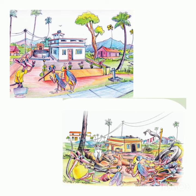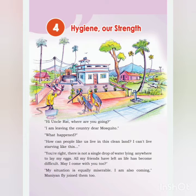We can find waste everywhere. Now we will check a conversation between some animals. 'Hi uncle rat, where are you going?' 'I am leaving the country, dear mosquito.' 'What happened?' 'How can people like us live in this clean land? I can't live starving like this.' 'You are right, there is not a single drop of water lying anywhere for me to lay my eggs. All my friends have left as life has become difficult. May I come with you? My situation is equally miserable.' Money and fly join them too.